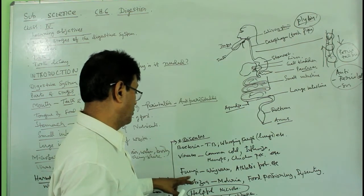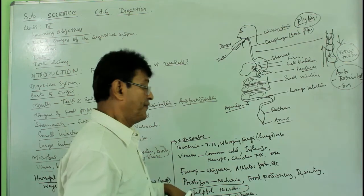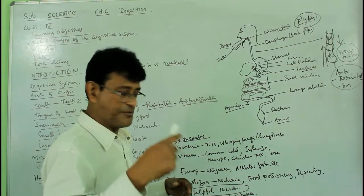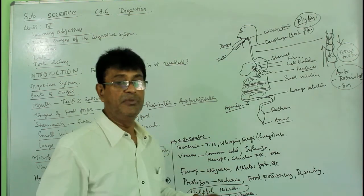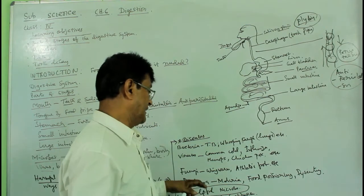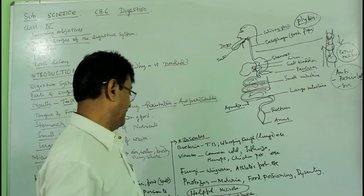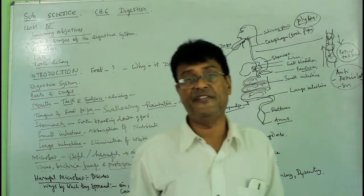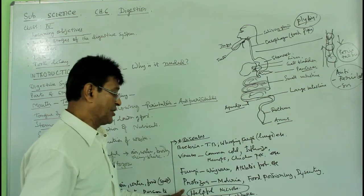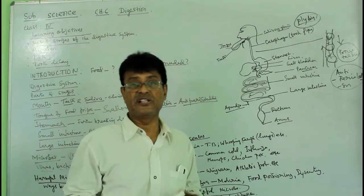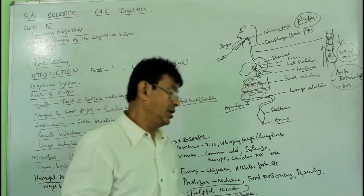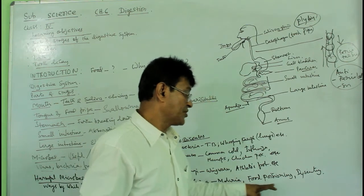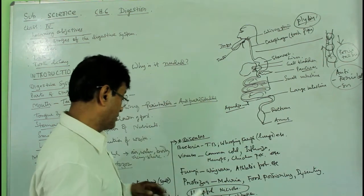Another type of microbe is fungi — not only microscopic, some are macroscopic too. Fungi cause diseases like ringworm, commonly known as daad, and also affect food by causing spoilage. Next is protozoa, which are carried by mosquitoes and flies and cause diseases like malaria and food poisoning.